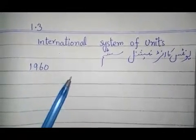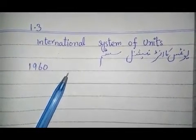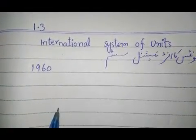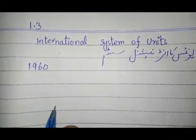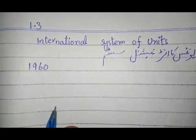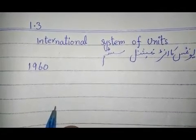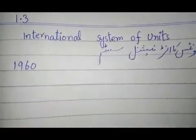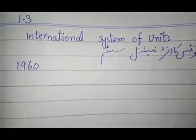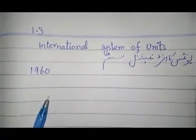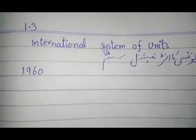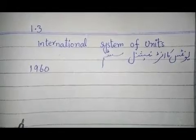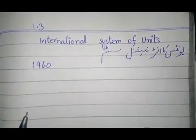If we have any quantity, there are standard units. The standard unit can have multiples — for example, if there is a gram, it can be a kilogram or a milligram. Similarly, for time, we don't only have seconds; there are also hours and minutes. That is why there are different standard units. In 1960, we established units from the International System of Units.